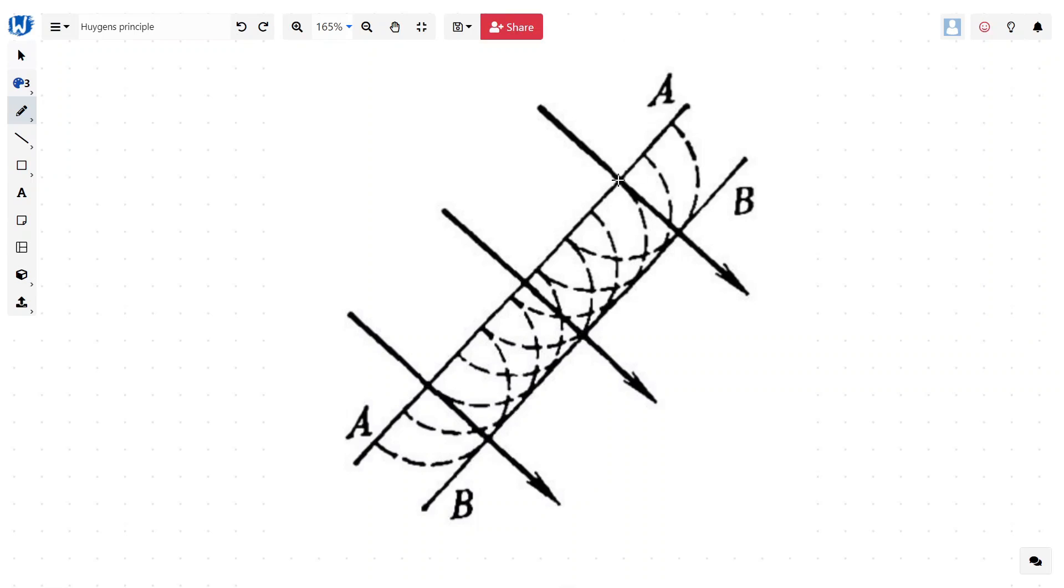What Huygens proposes is that every point on this envelope becomes the source of secondary wave. If we start another secondary wave from this point, we can choose as many points as we want. At each point, we start propagating another secondary wave. All this wave front moving forward after time delta T can be found on another envelope BB. And hence, the wave front has propagated from AA to BB during delta T.